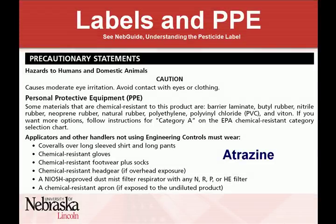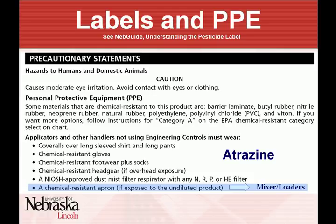Keeping those lines of communication open and letting everybody who could potentially be affected know about applications will help keep everybody safer. On the pesticide label — labels can vary depending on the type of application. This atrazine label talks about applicators and other handlers, lists PPE requirements, and the last item says a chemical-resistant apron is required if you're exposed to the undiluted product. So it doesn't always explicitly say 'mixer/loader,' but that's what it means — if you're doing the mixing operation, you have to add additional PPE.